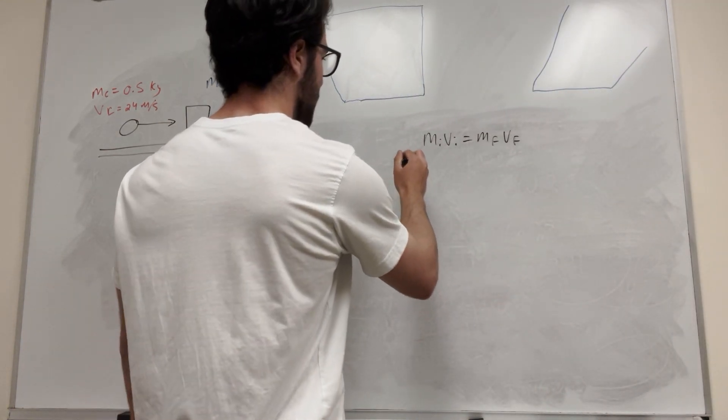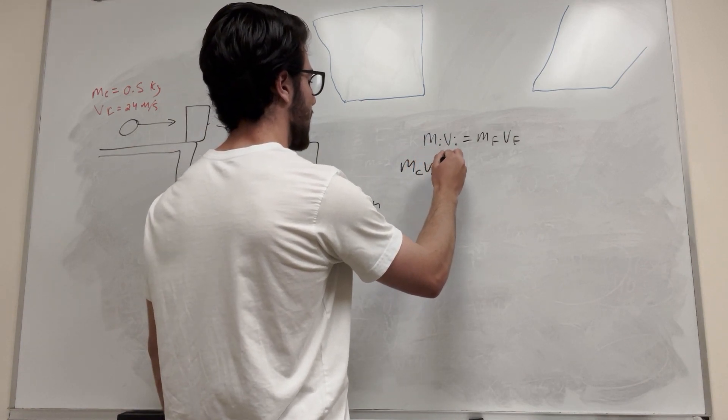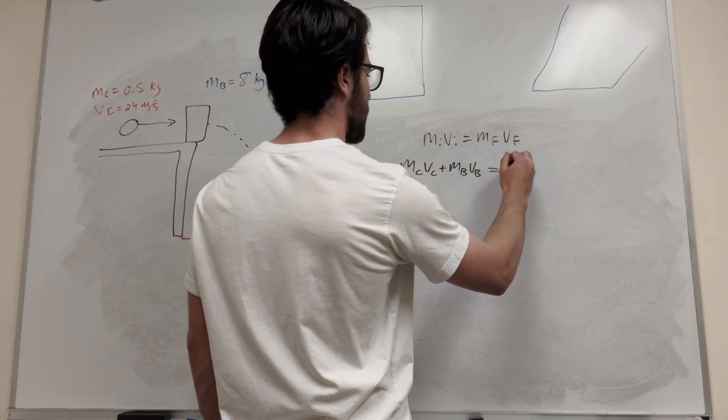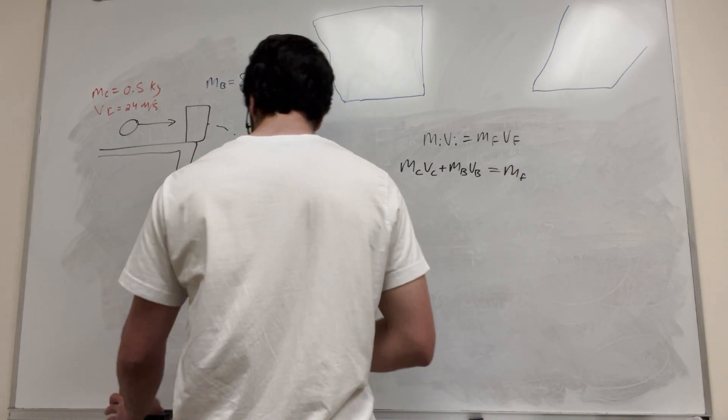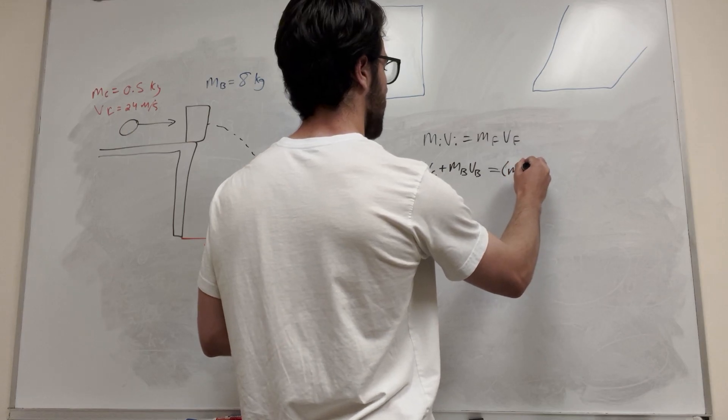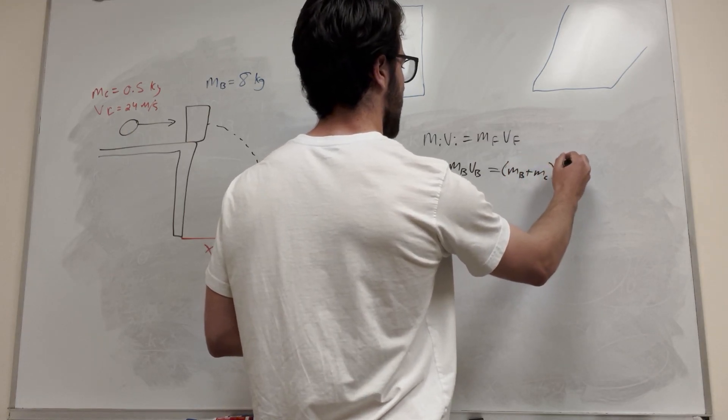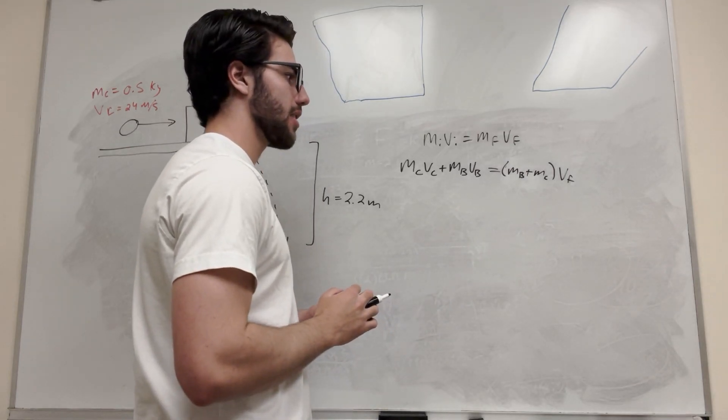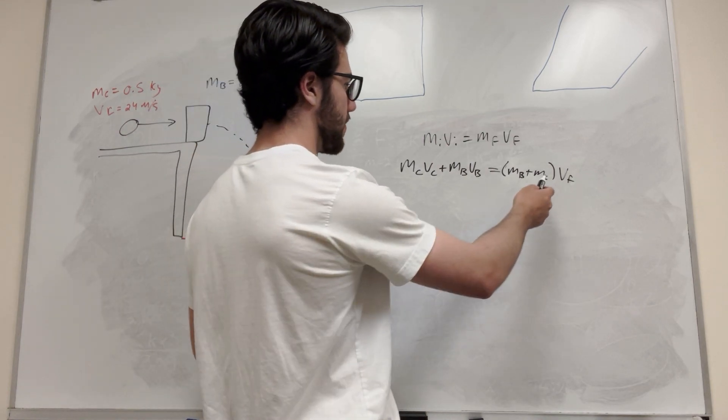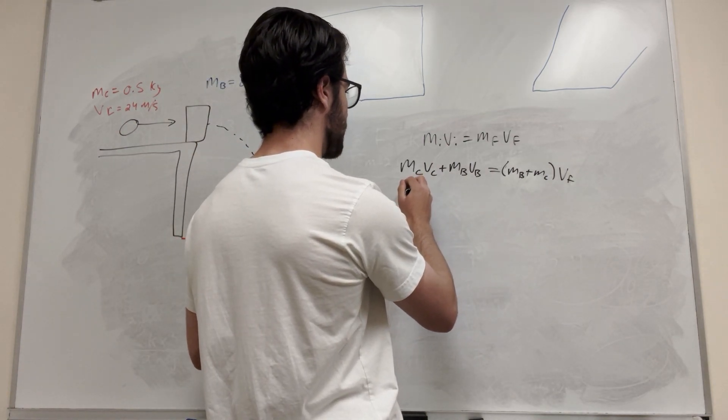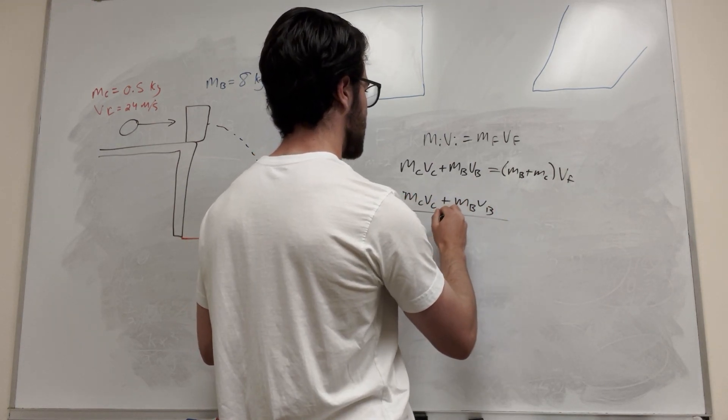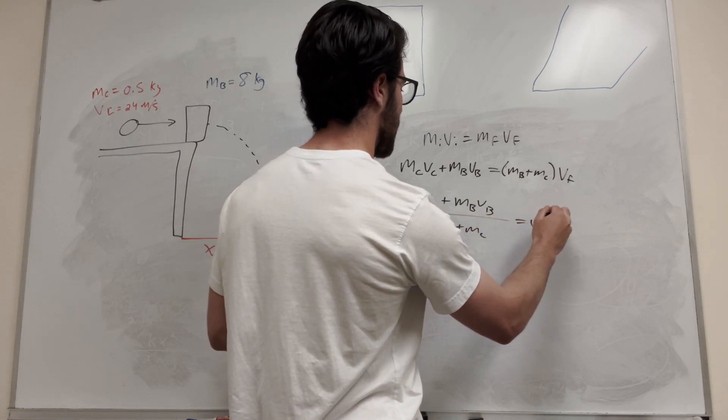So this is going to be equal to mass of the clay times the velocity of the clay, plus mass of the block times the velocity of the block. And that's going to be equal to the mass of both of them combined. So this is going to be mass of the block plus mass of the clay times the velocity of the final. We're trying to solve for that velocity of the final.